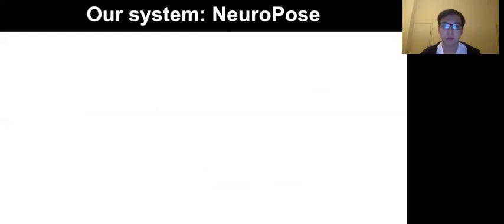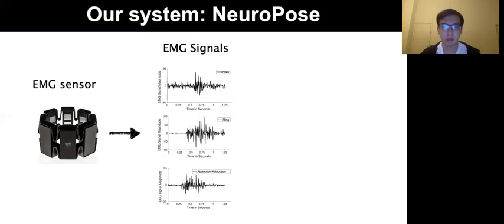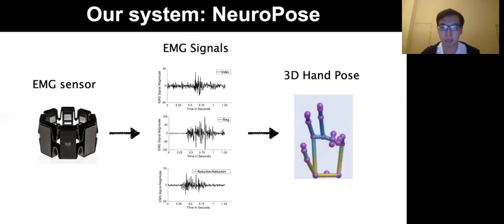Therefore, we present our system NeuroPose, which fills this gap in the literature by designing EMG wearable-based 3D finger pose tracking technology. NeuroPose uses an off-the-shelf Myo sensor consisting of eight EMG channels. It captures finger motion to get EMG signals and then converts them to 3D hand pose like this.